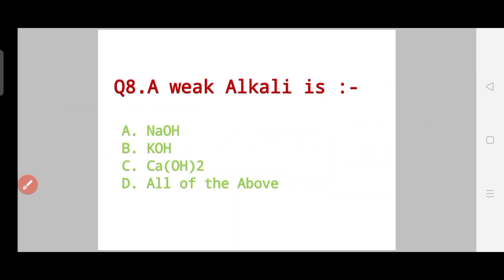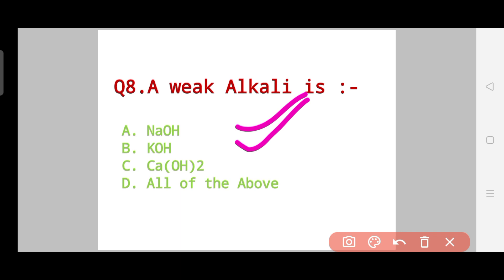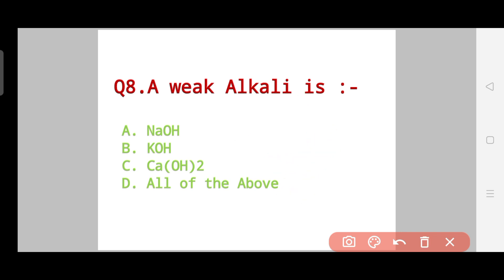Question number eight: which is a weak alkali — NaOH, KOH, Ca(OH)₂, or all of the above? If anyone knows this answer, do comment down the answer to this question.